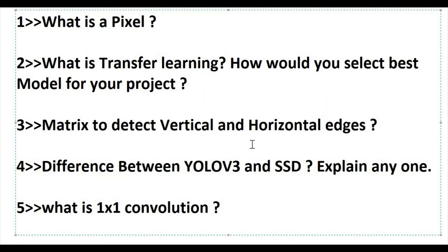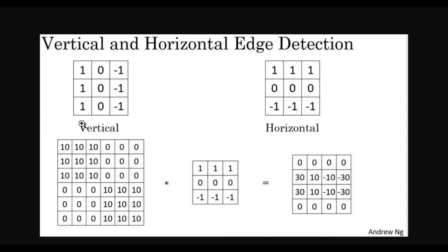Third question: what is the matrix used to detect vertical and horizontal edges? We know that OpenCV has many APIs and methods to detect edges — for example, Canny edge detection, Gaussian filters, and others. The logic behind those methods: any image is made up of pixels, and it's like a matrix of values between 0 and 255. As you can see on my screen, the upper-left matrix is for detecting vertical edges and the upper-right is for horizontal edges. If you multiply the pixel matrix with the vertical edge detection matrix, the output will contain only vertical edges.